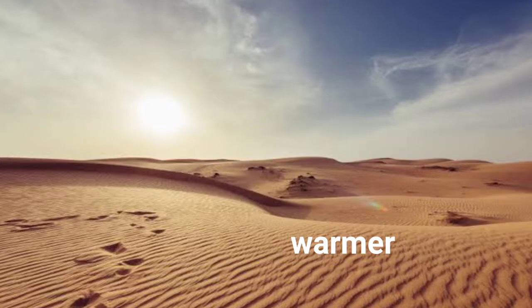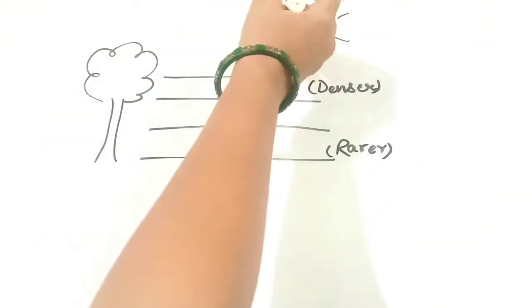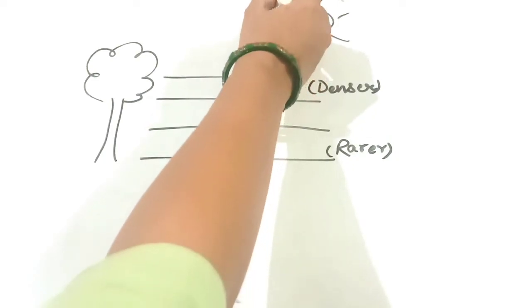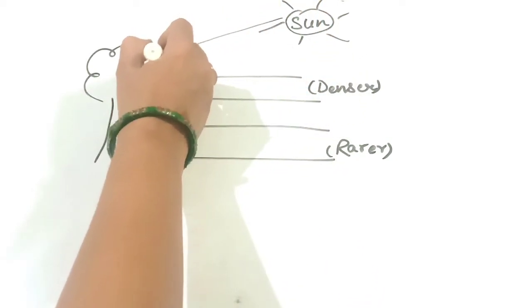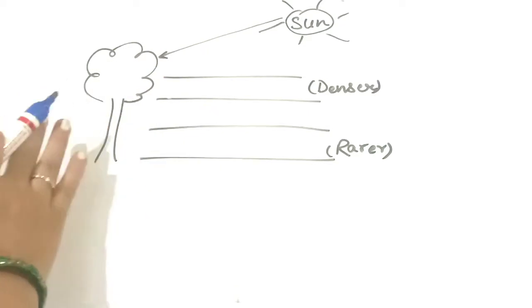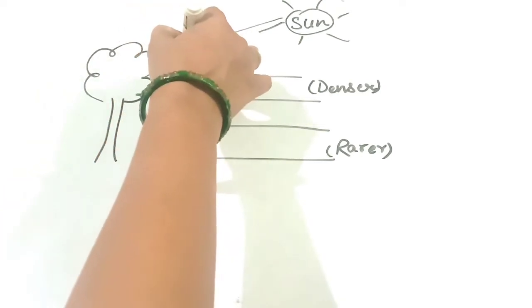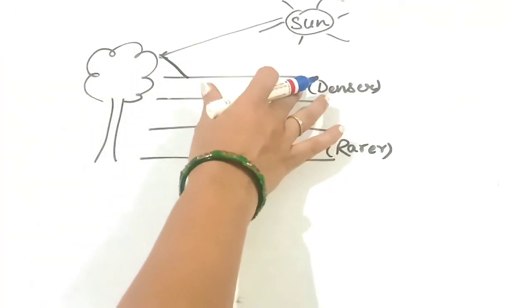Now what is the process of mirage formation? What happens when the ray of light from the sun hits the target? In this case, the target object is a tree. After hitting this object, the ray of light goes to the first layer, the denser layer.